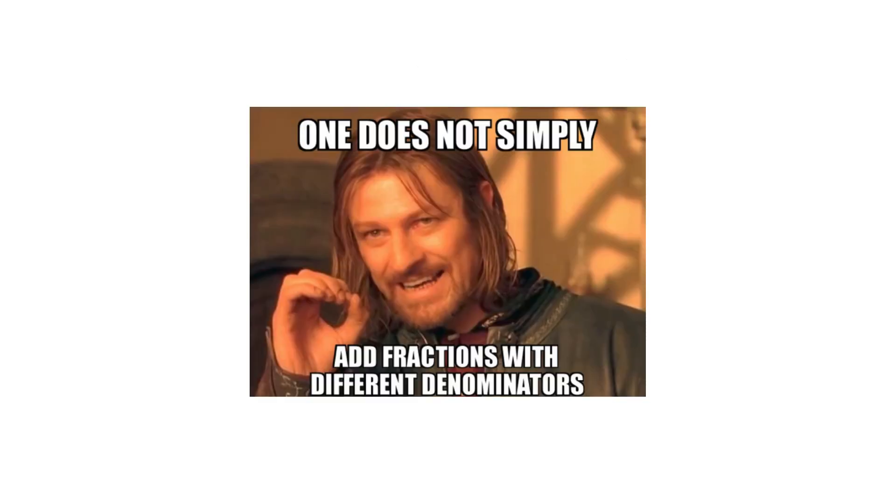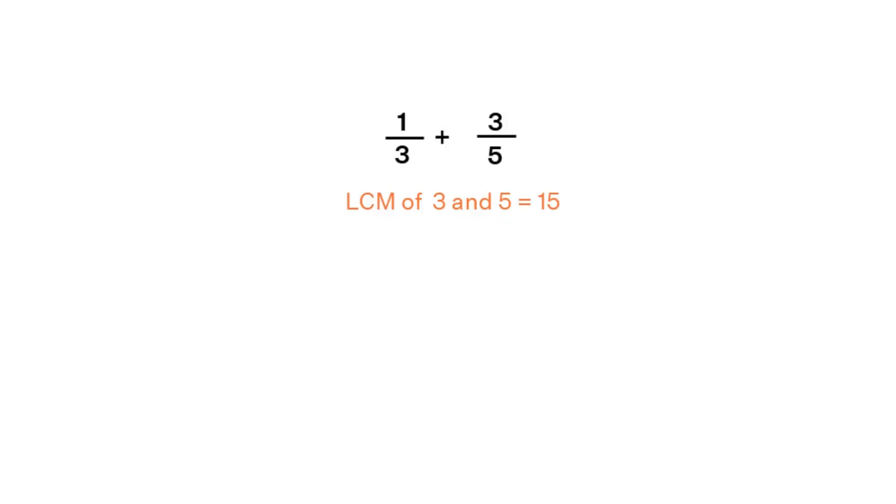To add fractions, the denominators have to be the same. This can be achieved by finding a number that is a multiple of both denominators, called a common multiple, and rewriting the fractions so that this common multiple is the denominator of both. Then, the result of adding the fractions is the sum of the numerators over the denominator.